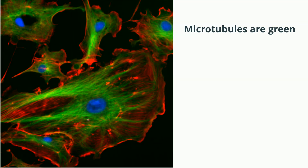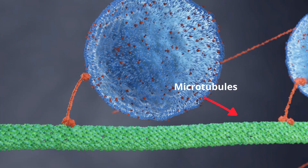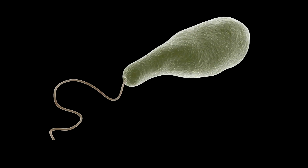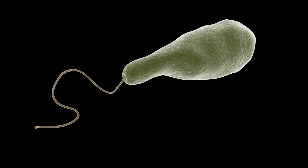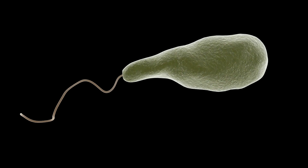And finally, microtubules are the largest filaments and also create tracks for proteins. Think of the microtubules as roads in the cell. They also help pull the chromosomes apart during mitosis. Microtubules also help with the movement of the entire cell by creating flagella or cilia that help propel certain cells.